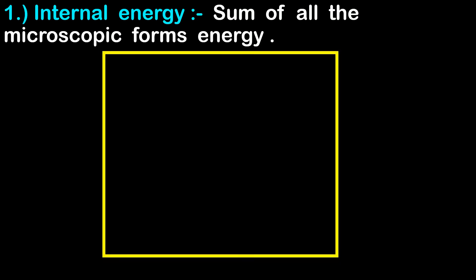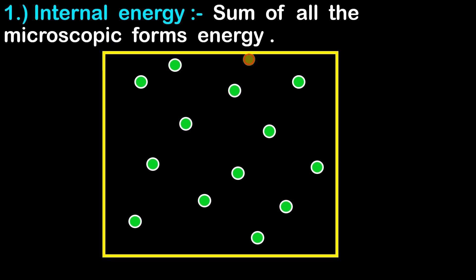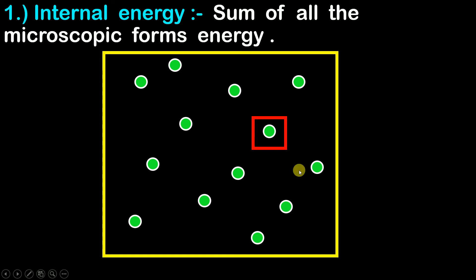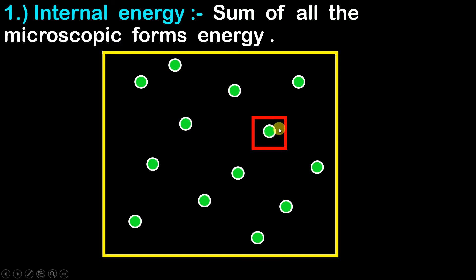To understand microscopic forms of energy, let us consider a container with a gas inside it. This complete gas present inside the container is our system. Now, a molecule is nothing but the microscopic part of the system — the molecule is not the system itself, but it is the microscopic part of this complete system.